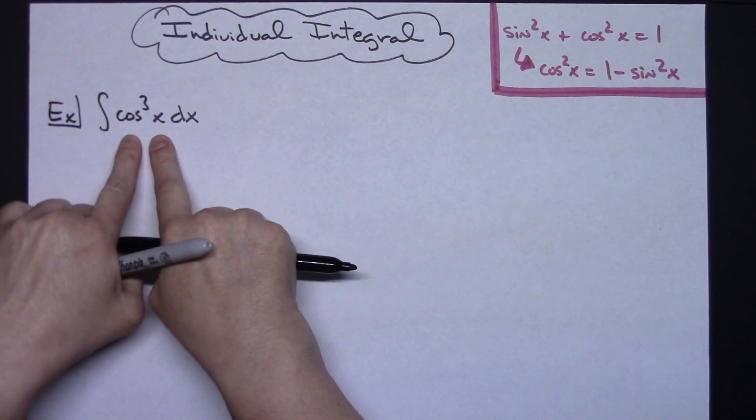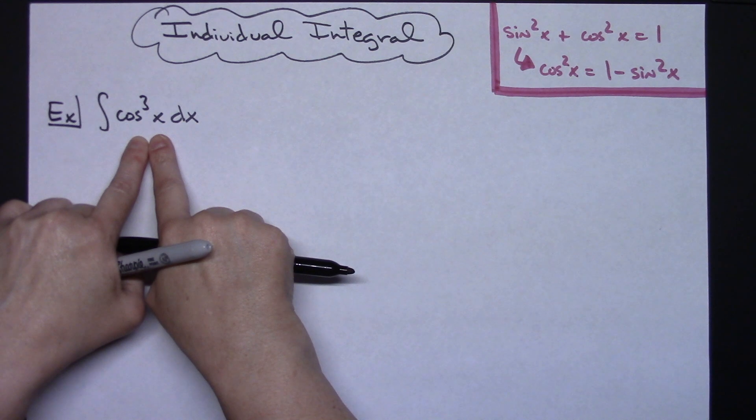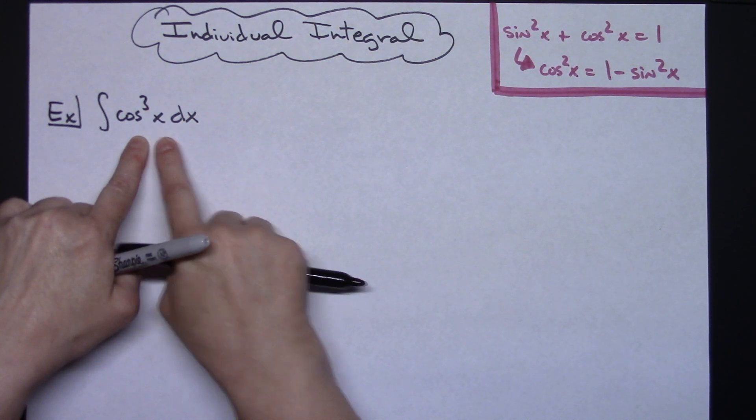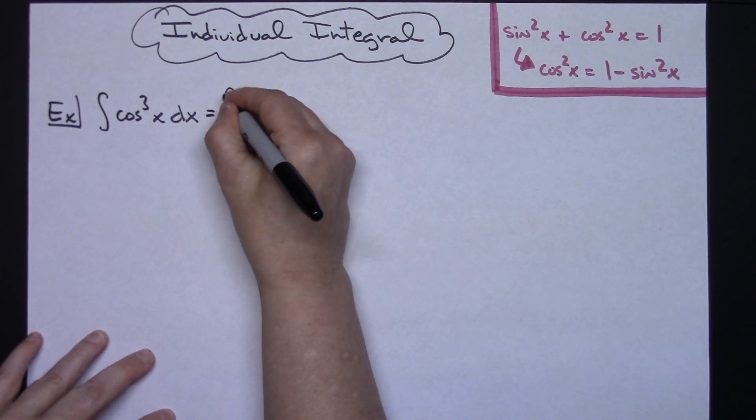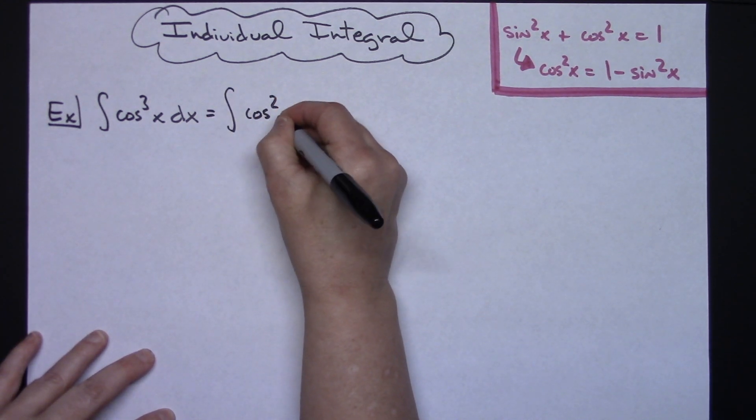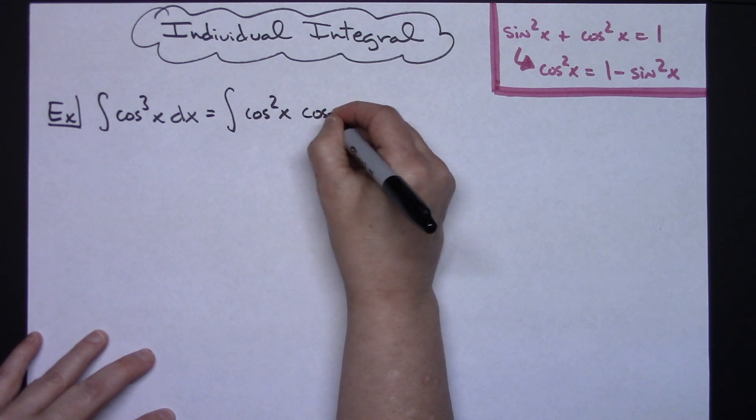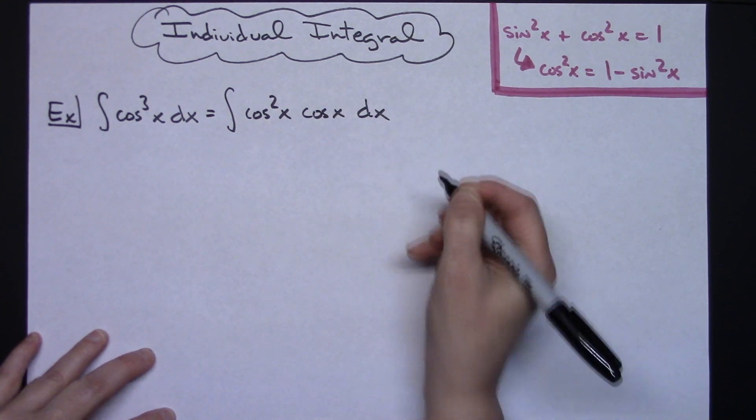The first thing I'm going to do is break this up into a cosine squared times cosine so that I can do this substitution. So then we're going to have the integral of cosine squared x times cosine x and then dx.